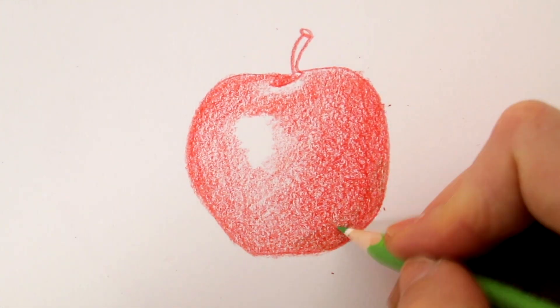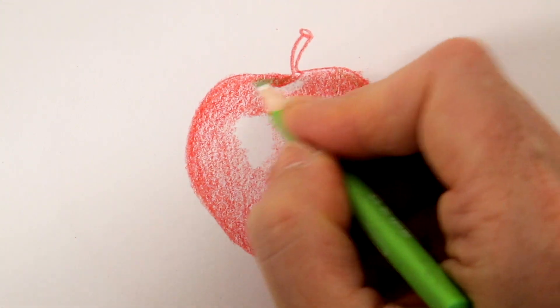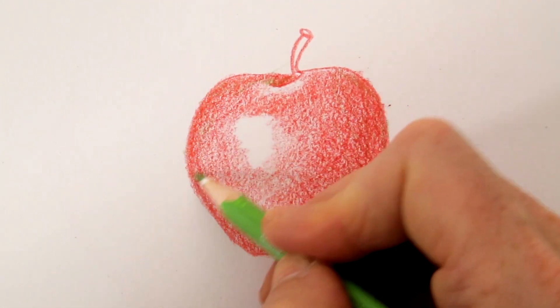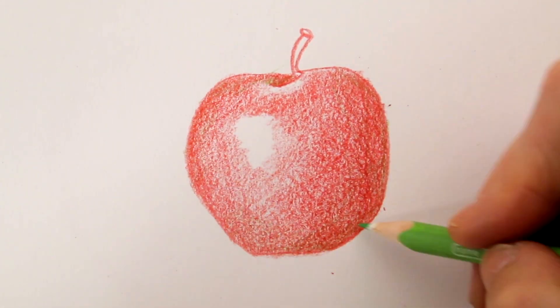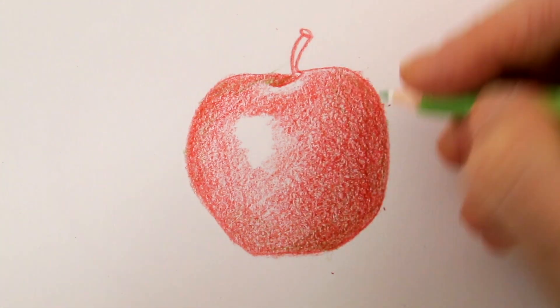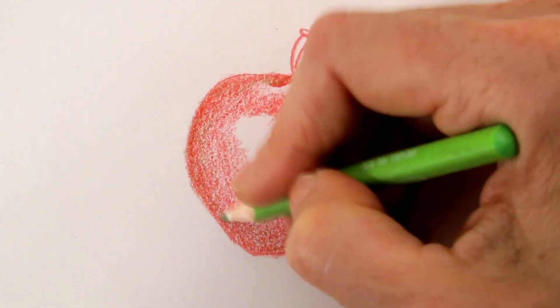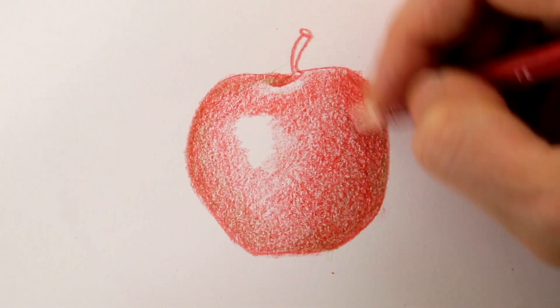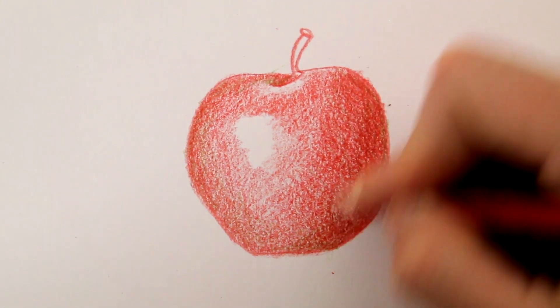Now to deepen the red color, pick up its opposite color, green. At first that seems kind of an unnatural thing to do, but you will see that if you gently add a layer of green to the darker areas, the red color deepens even more now.